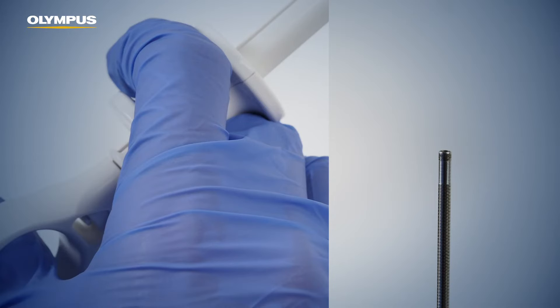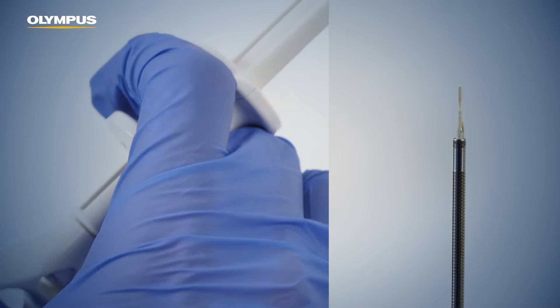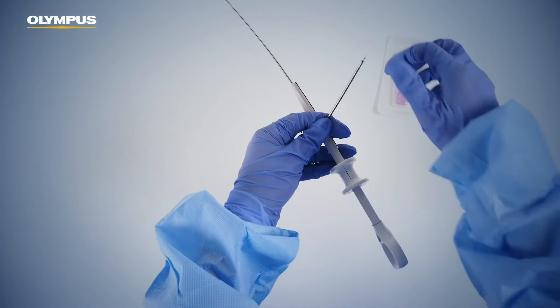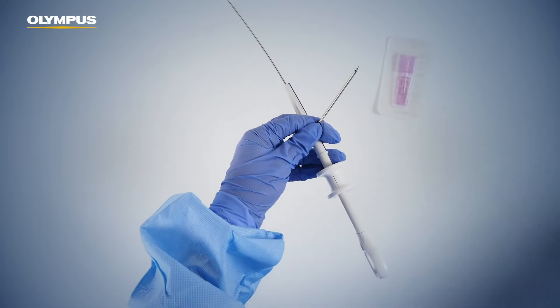After withdrawing the instrument from the endoscope, push the slider so that the hook is extended from the coil sheath. Now bend the clip connector with respect to the hook and remove.